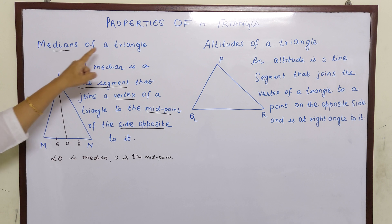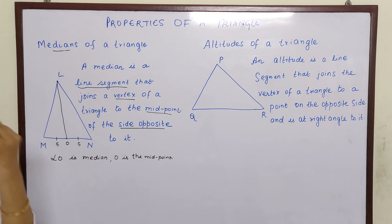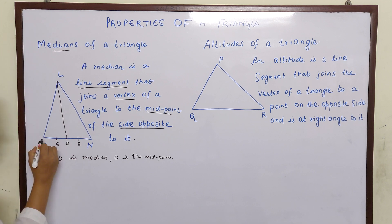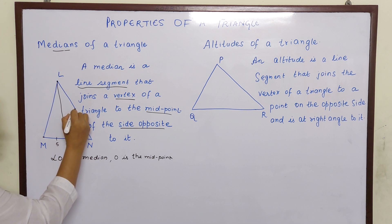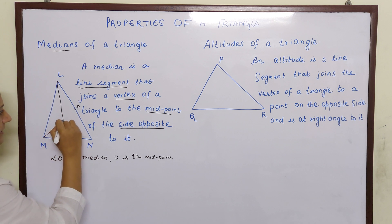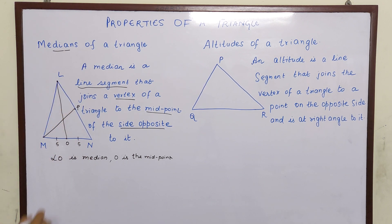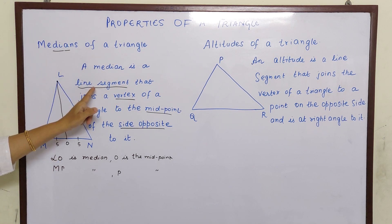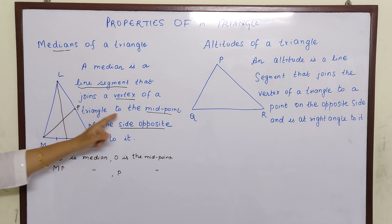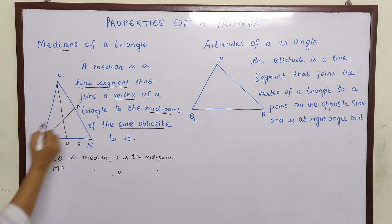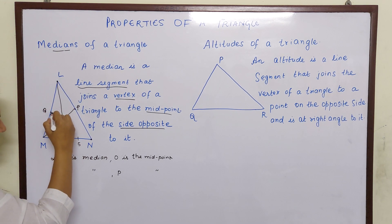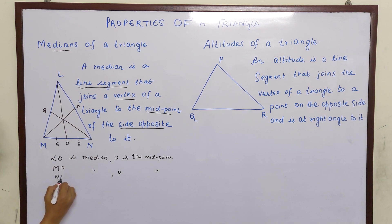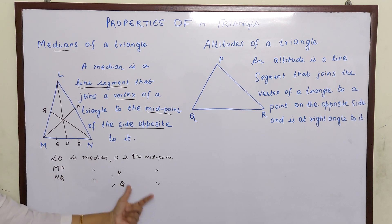In the same way, in a triangle — a three-sided figure — there will be three medians. LO is the first median. Next, if I draw a line segment from vertex M to the midpoint of the opposite side LN — let this midpoint be P — then MP is our second median. P is the midpoint. In the same way, if I draw a line segment from vertex N to the midpoint of the side opposite to it — let us name it Q — then NQ is the third median. So there are three medians and O, P, Q are the midpoints.